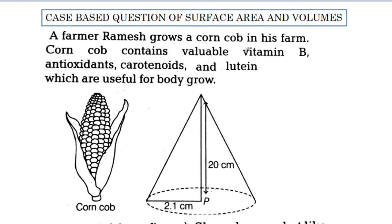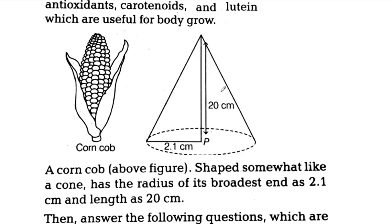A farmer Ramesh grows a corncob in his farm. Corncob contains valuable vitamin B, antioxidants, carotenoids and lutein which are useful for body growth. The corncob is shaped somewhat like a cone, with the radius of its broadest end as 2.1 cm and length as 20 cm. The height is 20 cm. We have a few questions to answer.